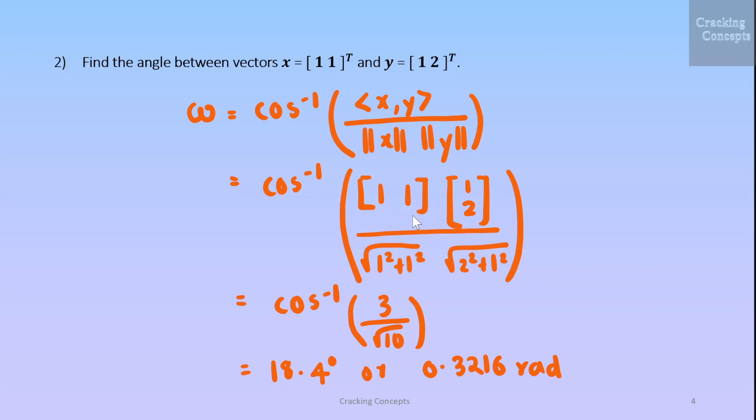So the norm of this vector is root of 1 square plus 1 square and that of this is root of 2 square plus 1 square. So on solving this we get cos inverse of 3 by root 10. So the angle will be 18.4 degrees or 0.3216 radians.